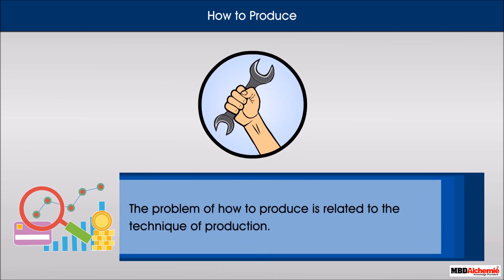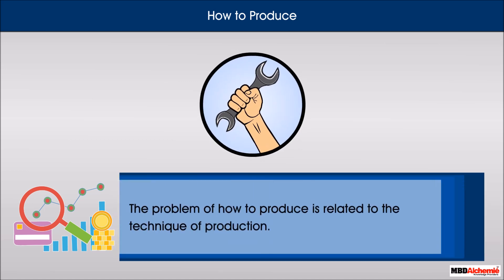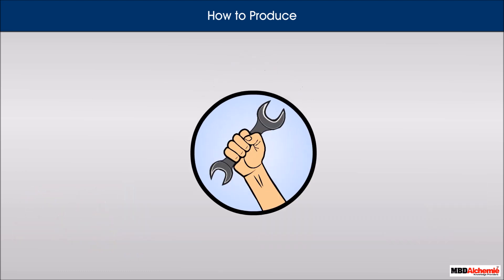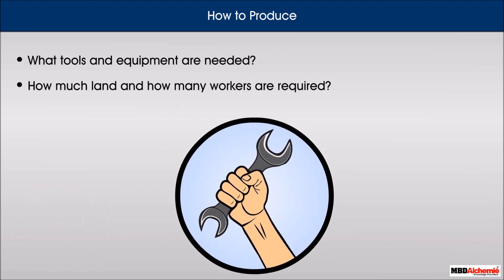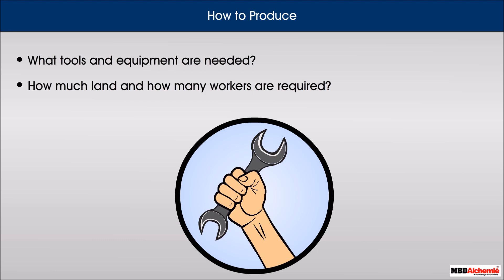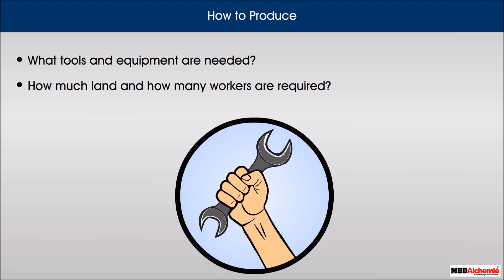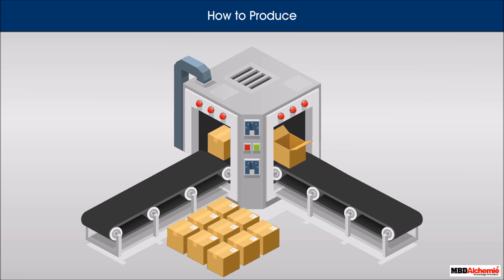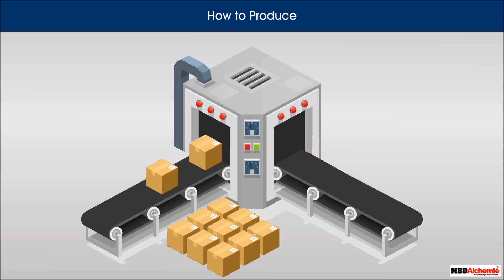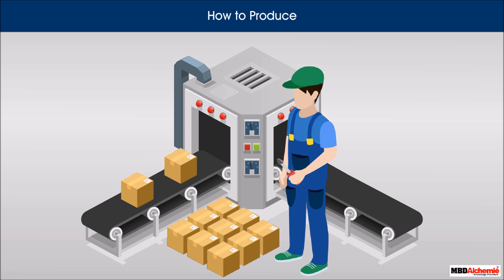The problem of how to produce is related to the technique of production. What tools and equipment are needed? How much land and how many workers are required? There are various ways of producing things, and a manufacturer needs to determine whether to use a capital-intensive or labor-intensive technique for producing the goods.